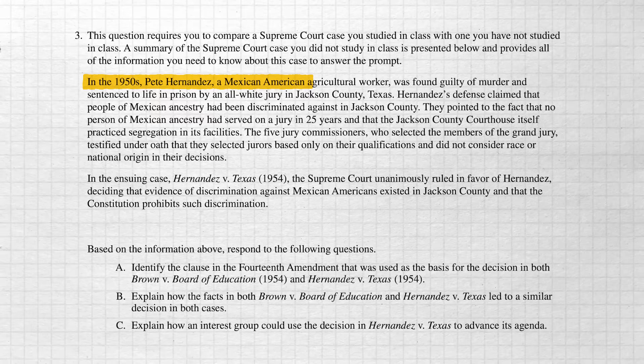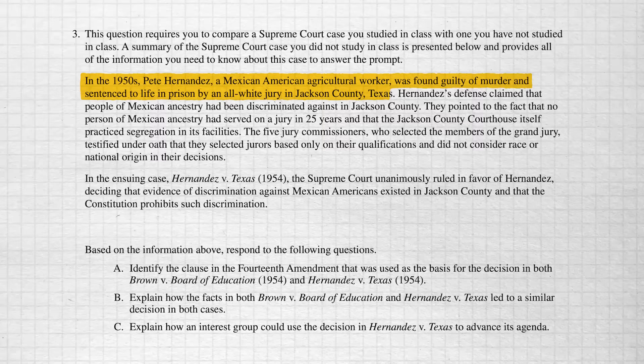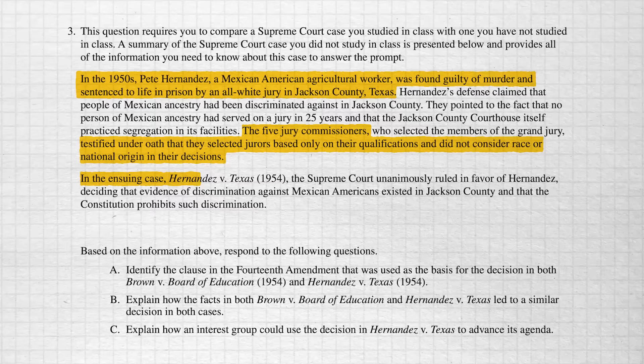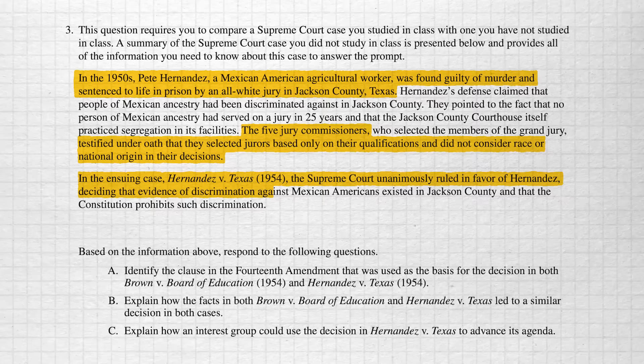Let's look at an example from the 2019 AP Government exam. The first thing you'll see is the stimulus. Here's the basic gist: In the 1950s, Pete Hernandez, a Mexican-American agricultural worker, was found guilty of murder and sentenced to life in prison by an all-white jury in Jackson County, Texas. The five jury commissioners testified under oath that they selected jurors based only on qualifications and did not consider race or national origin. In the ensuing case, Hernandez v. Texas, the Supreme Court unanimously ruled in favor of Hernandez, deciding that evidence of discrimination against Mexican-Americans existed in Jackson County and that the Constitution prohibits such discrimination. That's the description of the case you don't know.